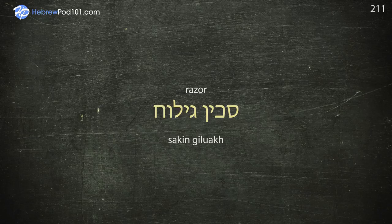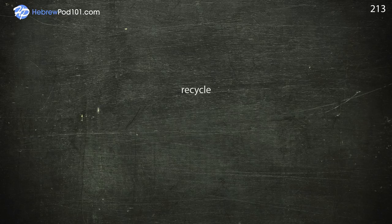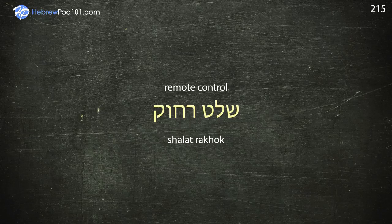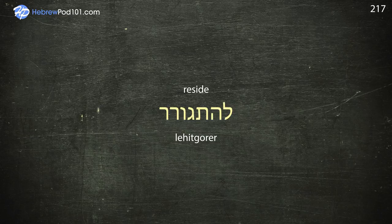Razor — Sakin Giluach. Real estate agent — Sochenet Nadlan. Recycle. Refrigerator. Remote control — Shalat Rachok. Rent — Lehaskir. Reside.